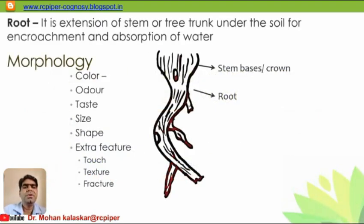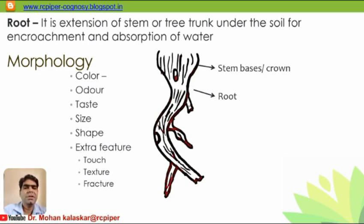First of all, we should know what is meant by root. Root is nothing but an extension of the stem or tree trunk under the soil for anchorage and absorption of water. The root has to perform two basic functions: to hold the plant in the soil as well as to absorb water. For that purpose, roots are very stout and composed of xylems, and they also need to conduct food.